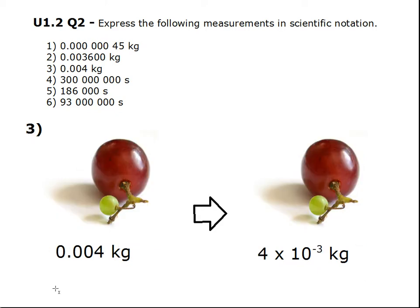Number 3. 0.004 kg. So we pull out the significant figure, which is 4, and we count the number of decimal places that we moved: 1, 2, 3. So 4 times 10 to a negative 3 kg.